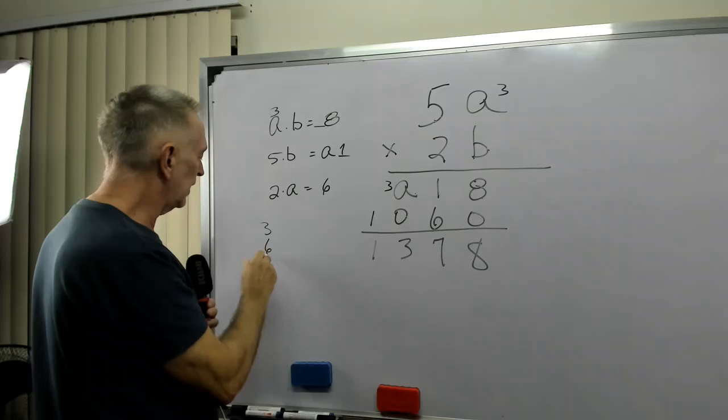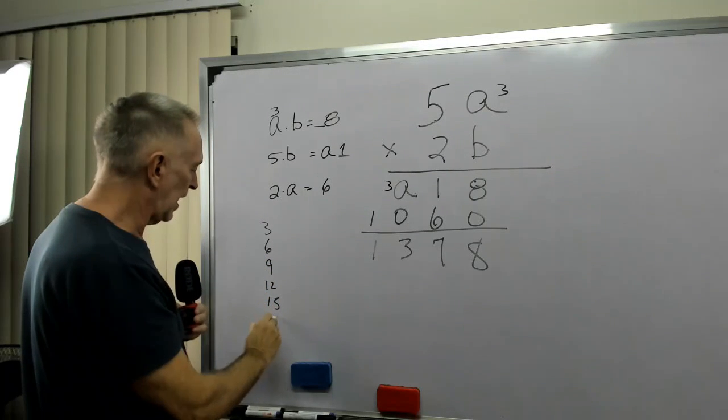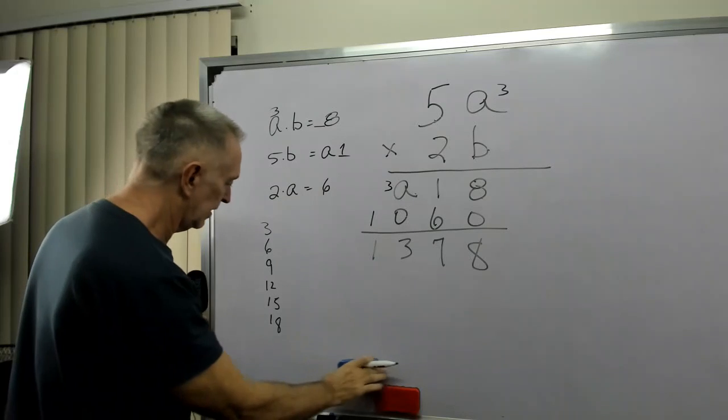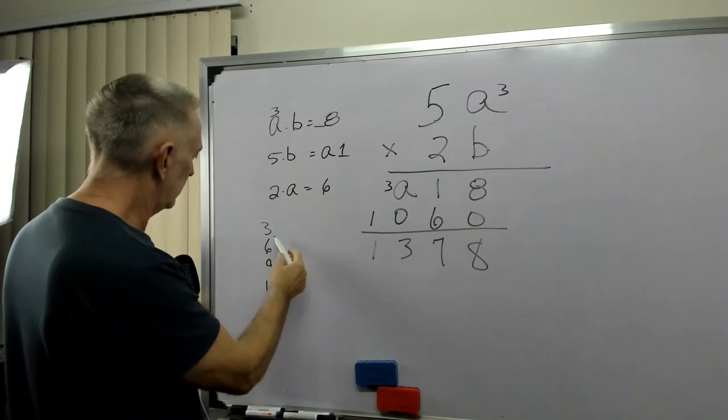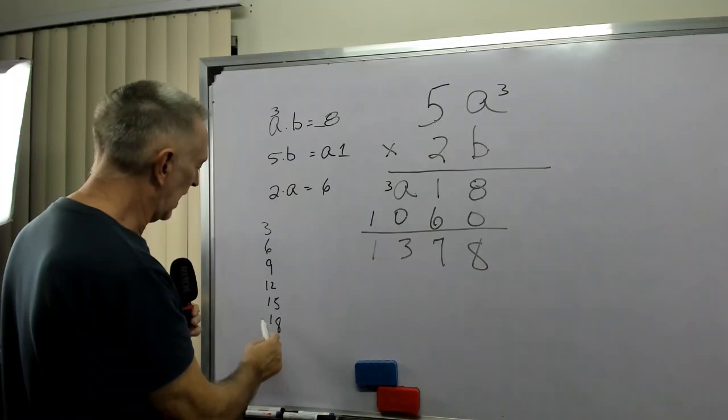3, 6, 9, 12, 15, 8, 18. See, there's no 8 in here until I get to 18.